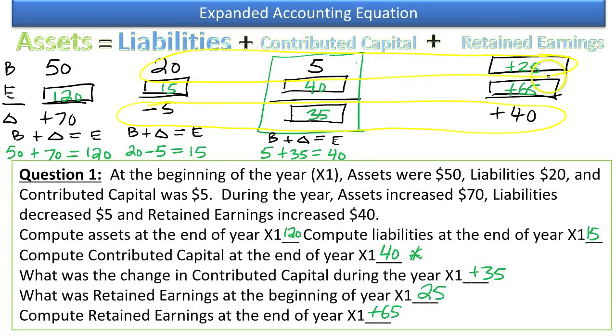Once you've done that, prove out your work. It went from 25 up to 65 at the end, so it must have increased by 40. You should prove your work horizontally and prove your work vertically. Once you've gone through and verified all those numbers, you know you've got this computed correctly.